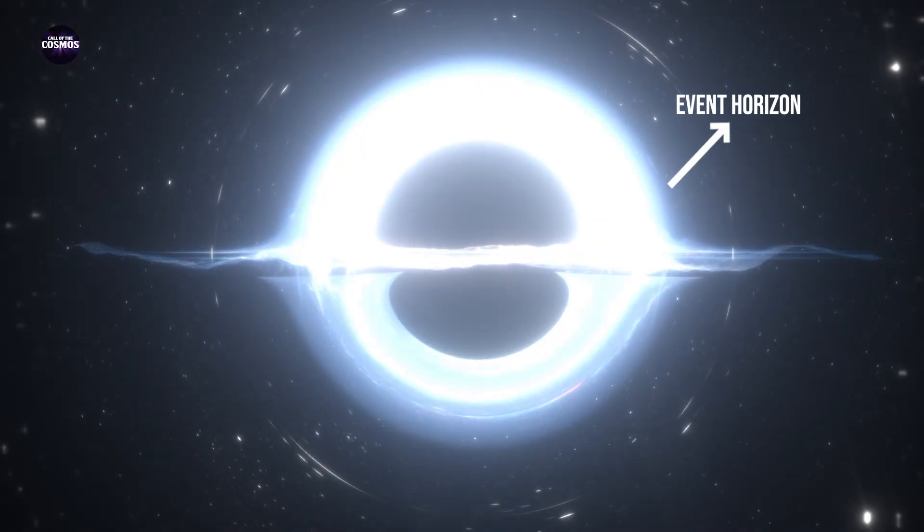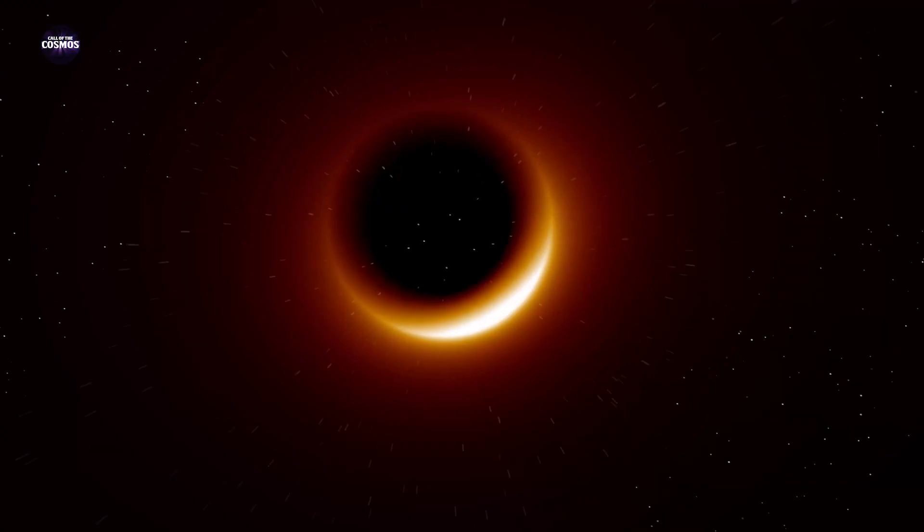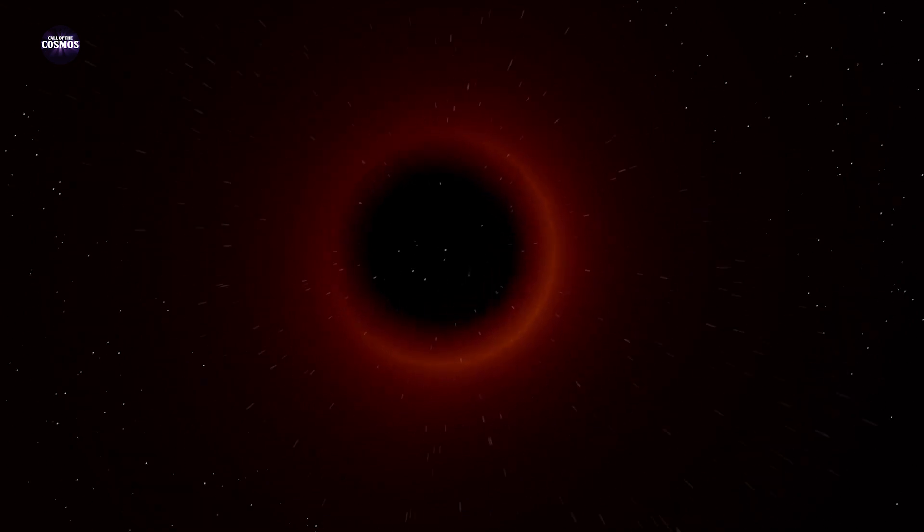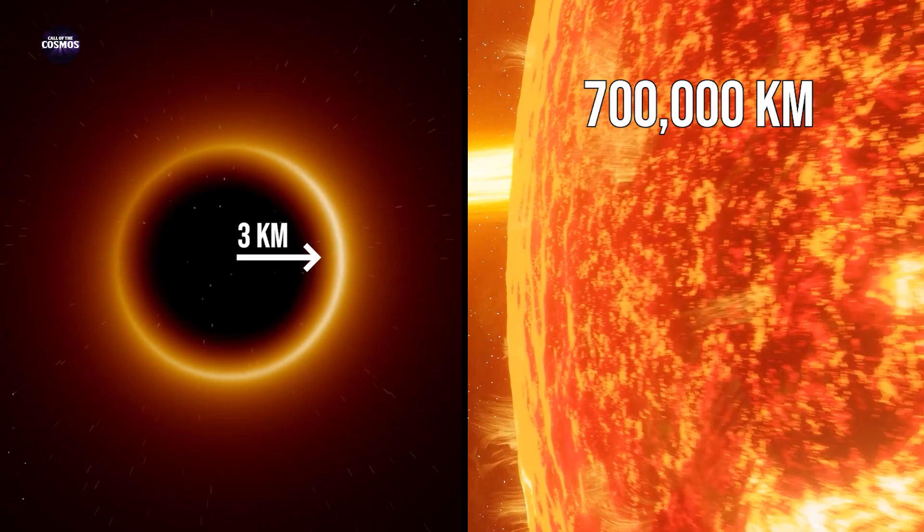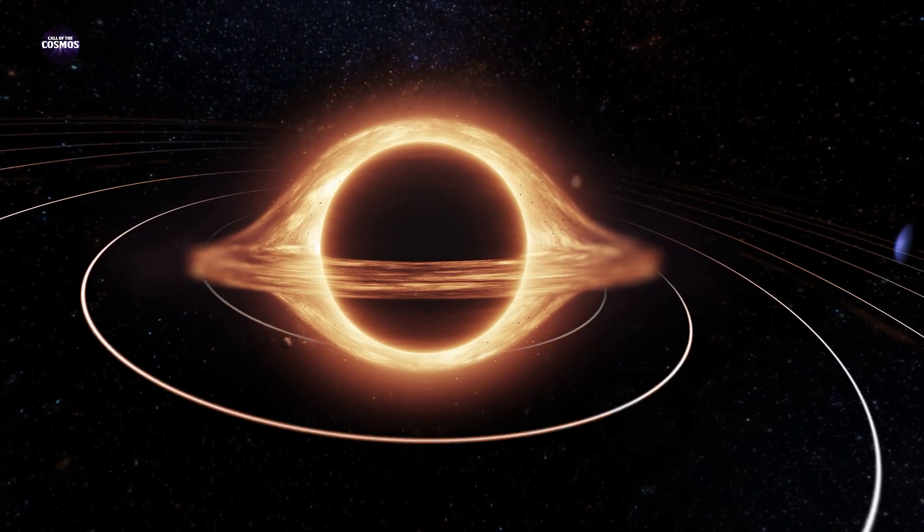An event horizon of a black hole is its boundary of no escape, its point of no return. And the radius of the event horizon of a black hole which weighed as much as the sun would be just three kilometers, which seems teeny in front of the 700,000 kilometers radius of our sun. So the Earth would have to go that close to the black hole to be devoured by it.